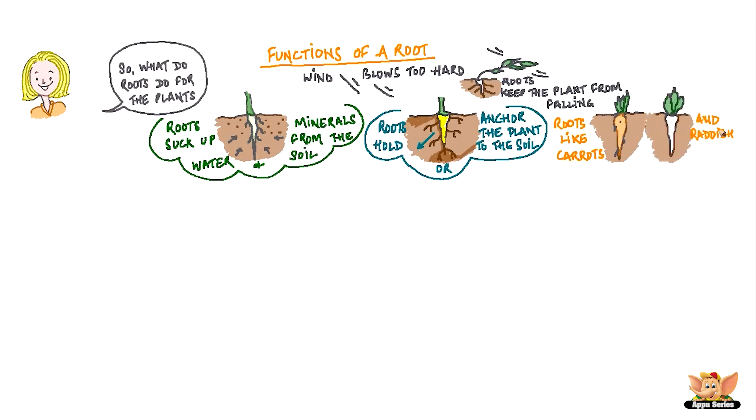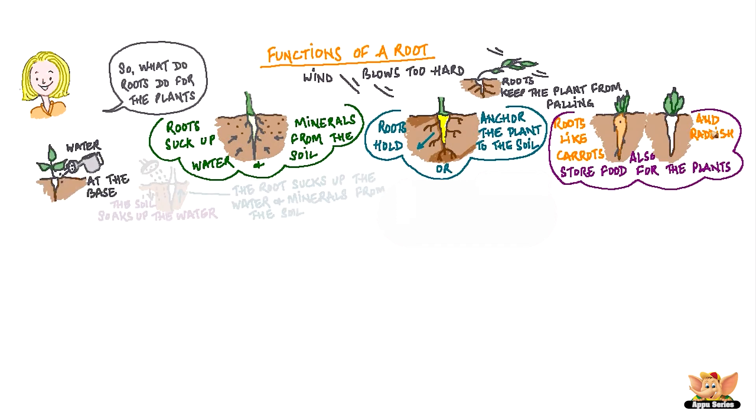Roots like carrot and radish also store food for the plant. So, you see now how important roots are for the plant? That is why we always water a plant at its base. The soil soaks it up. The roots suck up the water and the minerals from the soil.